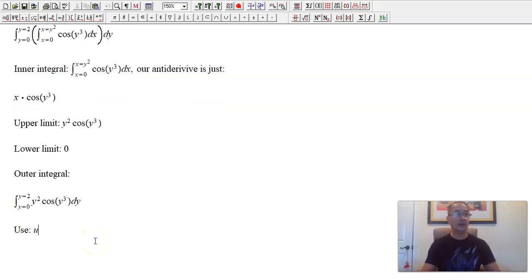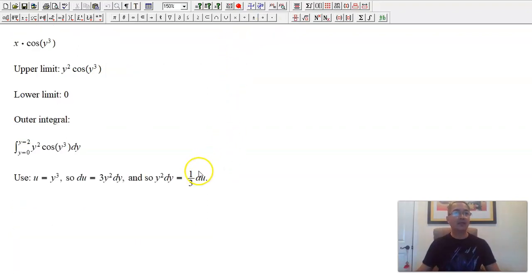Because now we have y squared cosine y cubed dy. Before it was just cosine y cubed. Now we have a y squared to help us out. It's just a u substitution. So let's use u equals y cubed. And of course, du equals 3y squared dy. And usually we solve for dy in terms of du. But notice that we have y squared dy in our integral. So therefore, it makes sense to just keep them together. And so, y squared dy is one third of du. See what I did there? Why solve for dy when you need y squared dy?